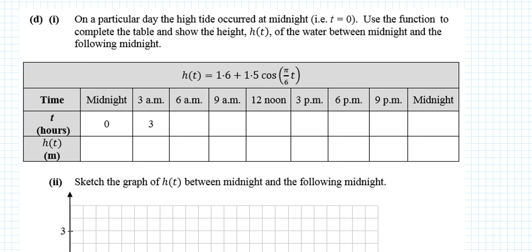Next question: On a particular day the high tide occurred at midnight (t=0). Use the function to complete the table showing the height h(t) between midnight and the following midnight. If the period was 12 hours, it starts at its maximum height because it's a cos curve. So 3.1. When will it also be at that max height? It'll be at that max height 12 hours later and another 12 hours later.